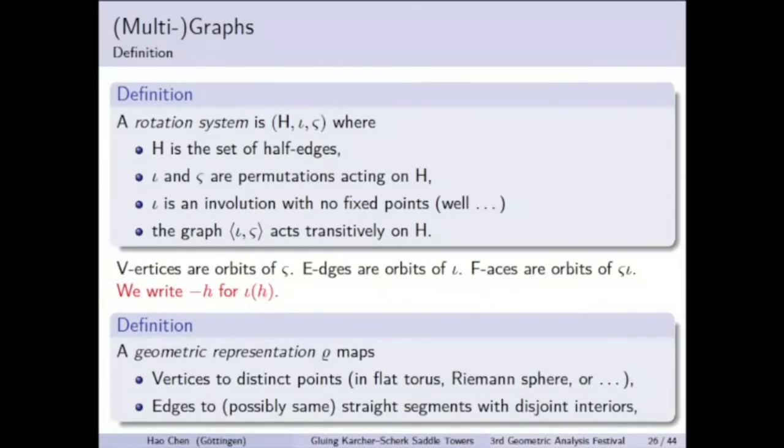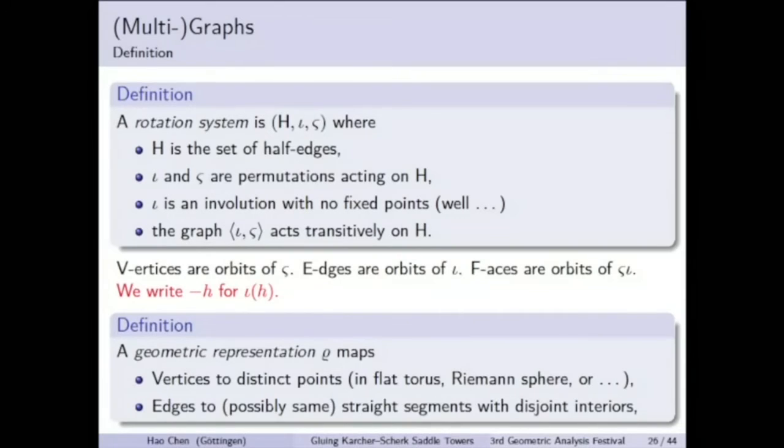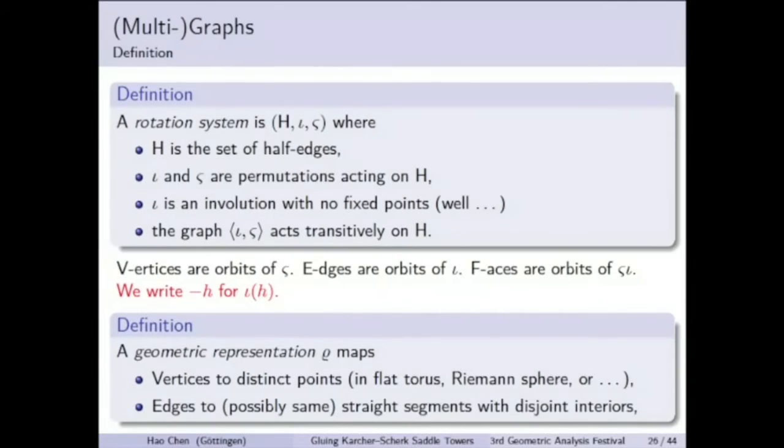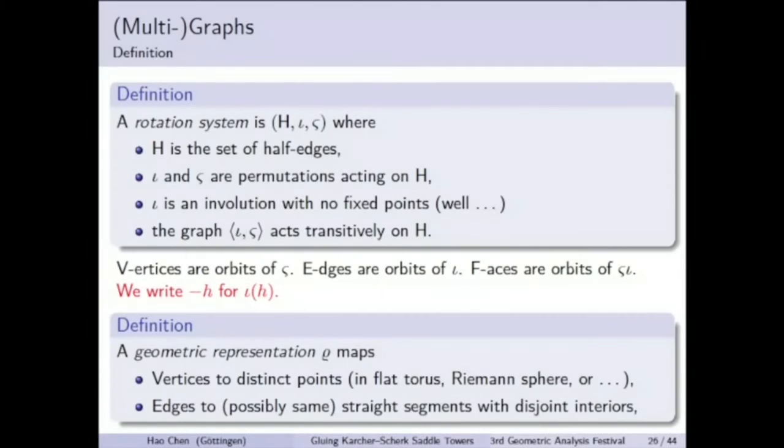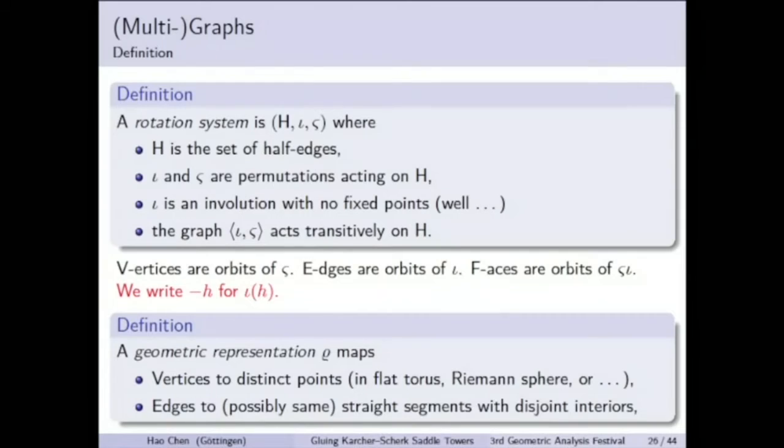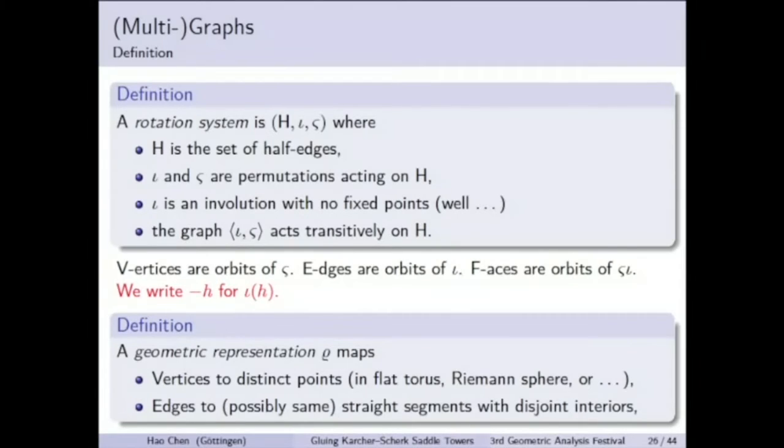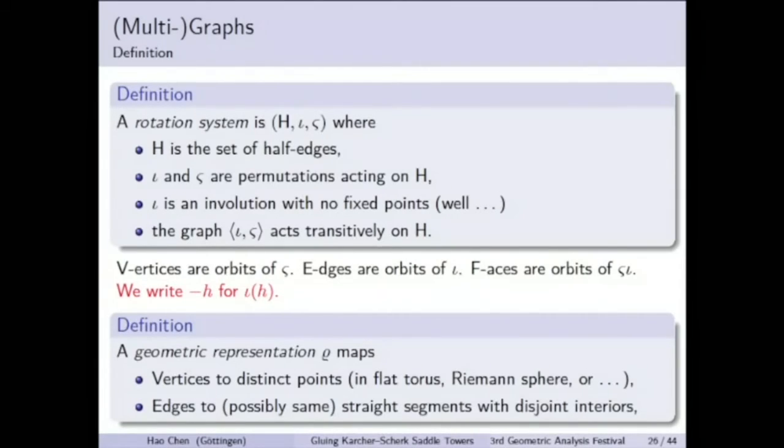In the geometric representation, the anti-clockwise order of the half-edges is given by the permutation sigma. When edges are represented to the same segment, their anti-clockwise order is not perceivable in the geometric representation, but it is still combinatorially encoded by sigma.